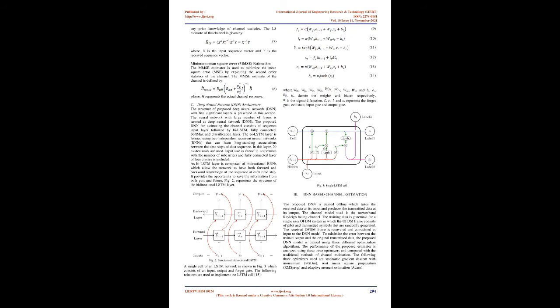Least Square (LS) estimation: The LS estimator is used to minimize the squared error between the received and original signal without needing any prior knowledge of channel statistics. The LS estimate of the channel is given by equation (7), where X is the input sequence vector and Y is the received sequence vector.